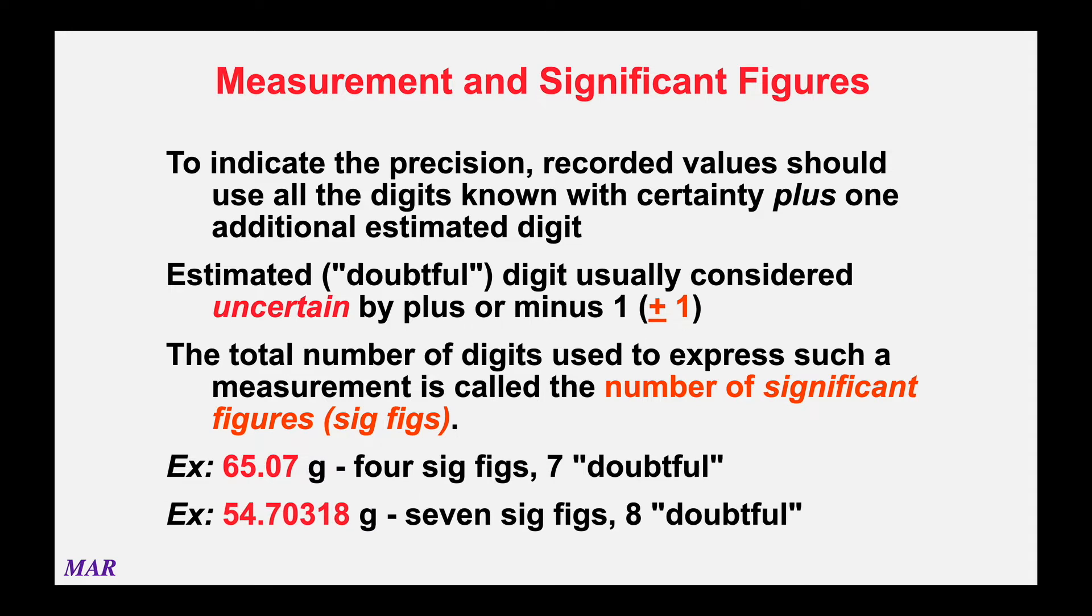Here's another number. 54.70318 has seven digits, seven sig figs. And the 8, that last position, that's the doubtful digit. That's the hundred thousandths position. That's the doubtful digit. But all those numbers are the number of sig figs. And you're probably seeing here that the more sig figs you have, it's going to be better as a chemist because we're so obsessed with these kind of things.